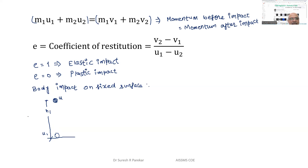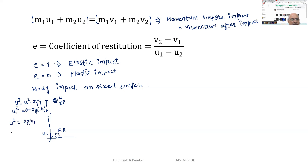Using the kinematic equation v² = u² - 2gy, with the ball released from rest at height h1, we get u1² = 2g*h1, so u1 = -√(2g*h1), the negative sign indicating the downward direction.